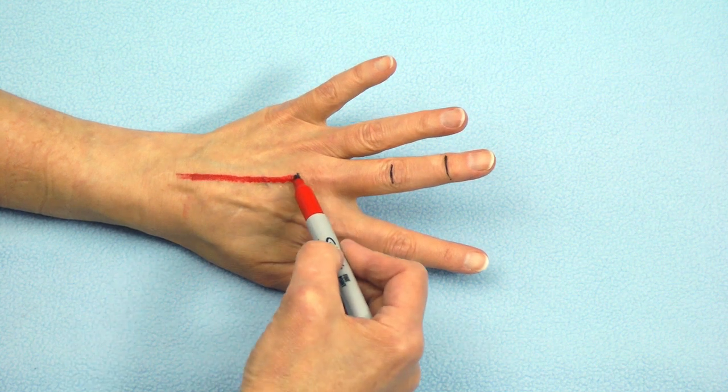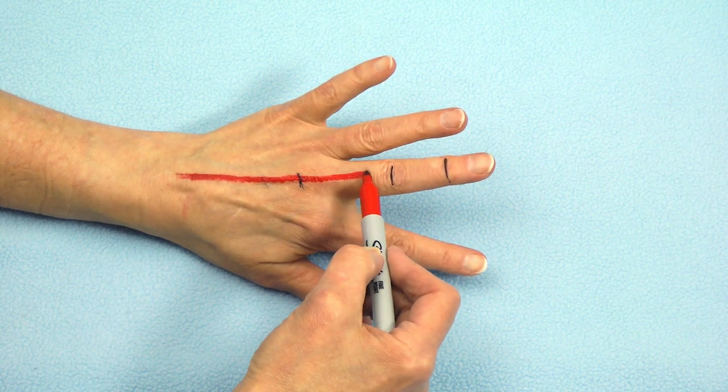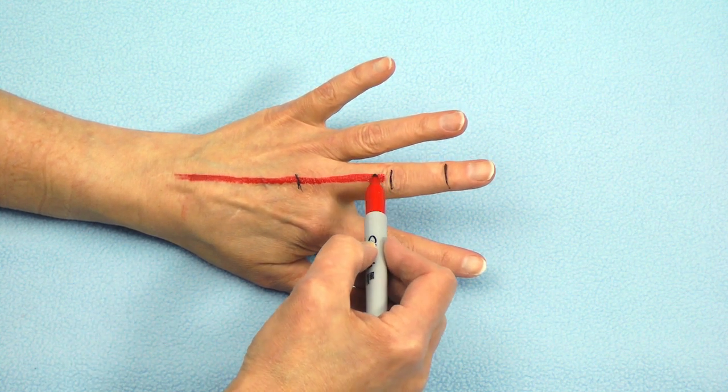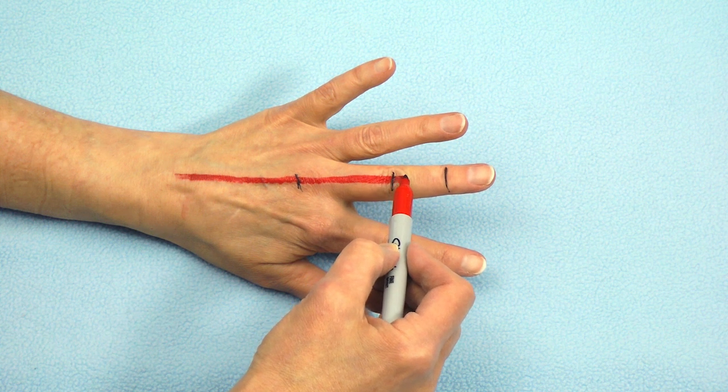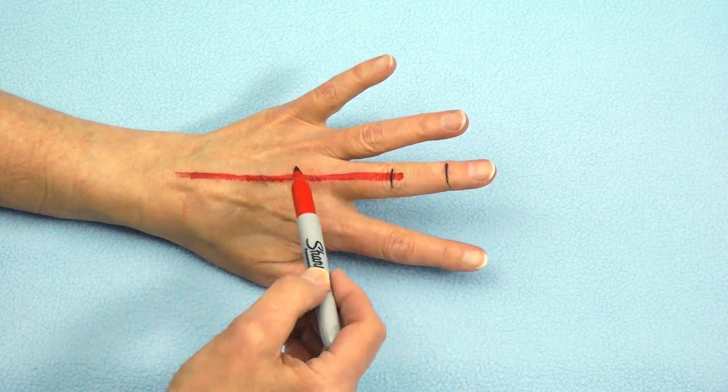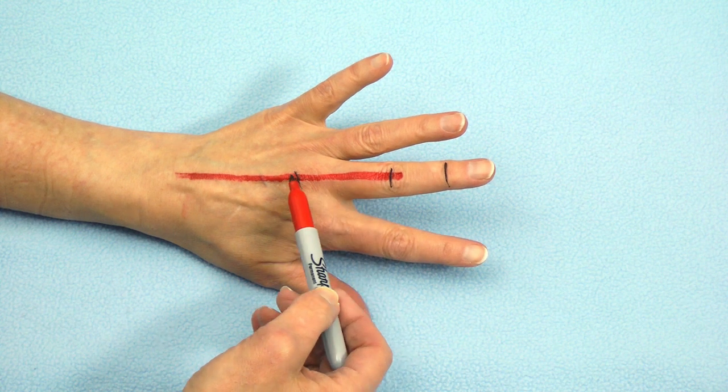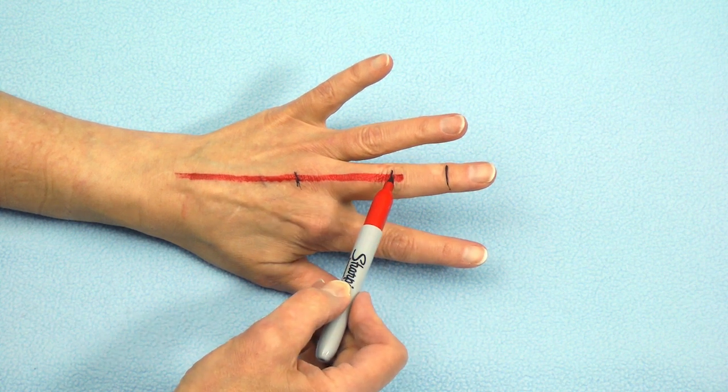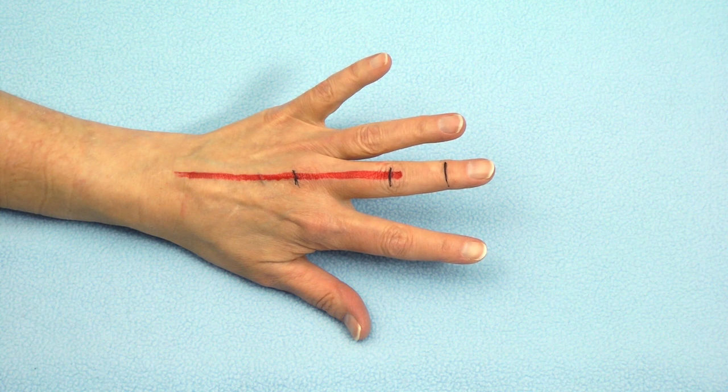crossing over the metacarpal phalangeal joint, continuing out straight, and going just distal to the PIP joint. From here to here, this is called the central slip, and the insertion is called the central slip insertion.